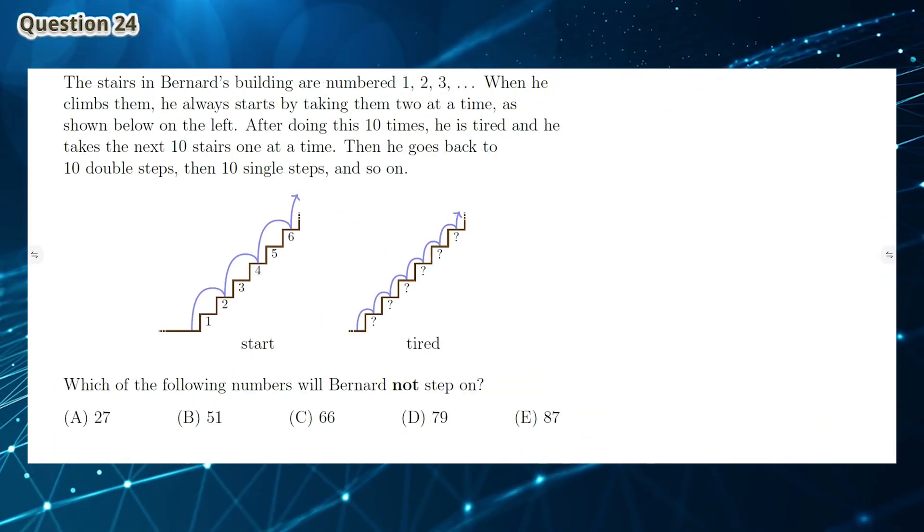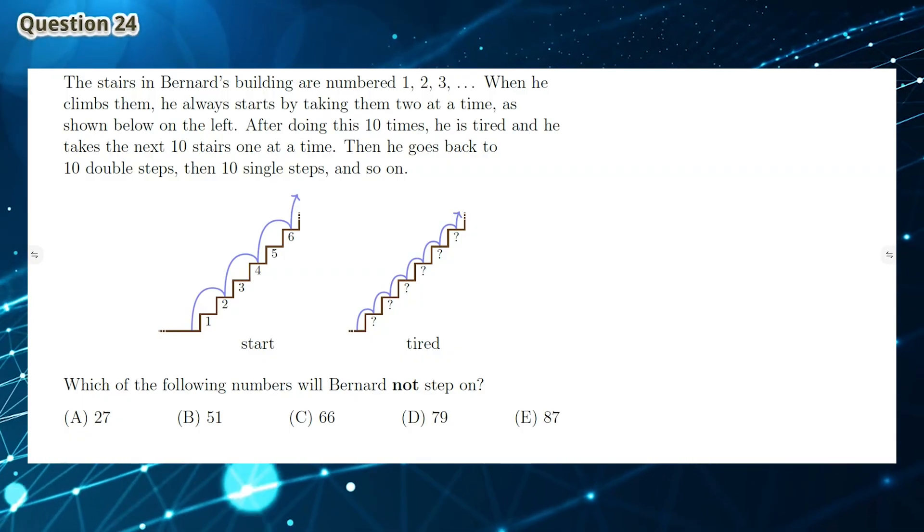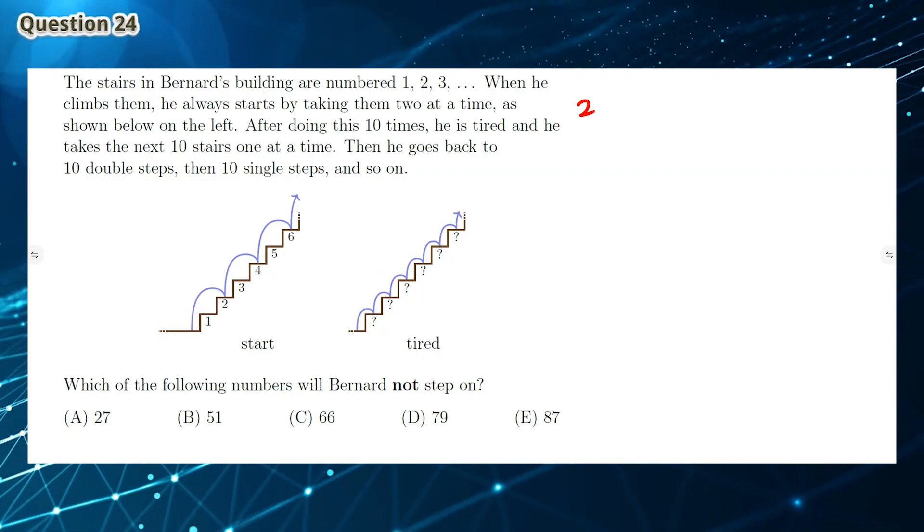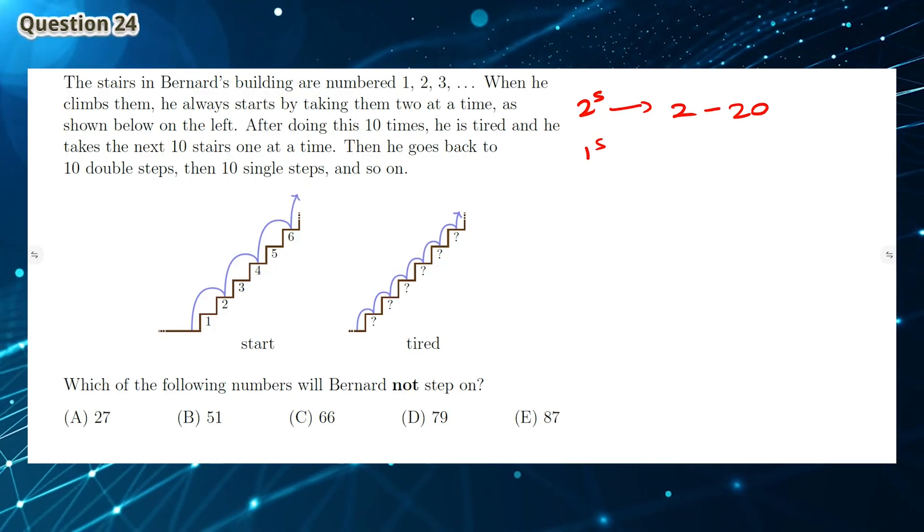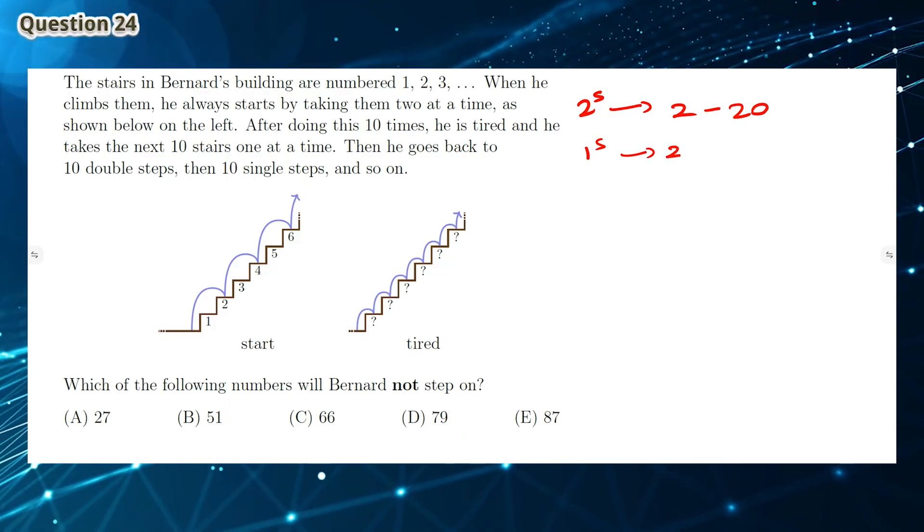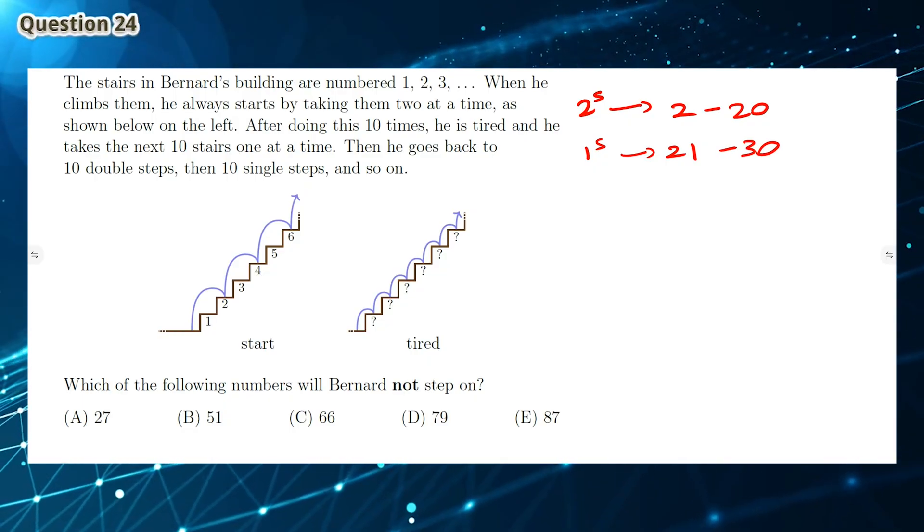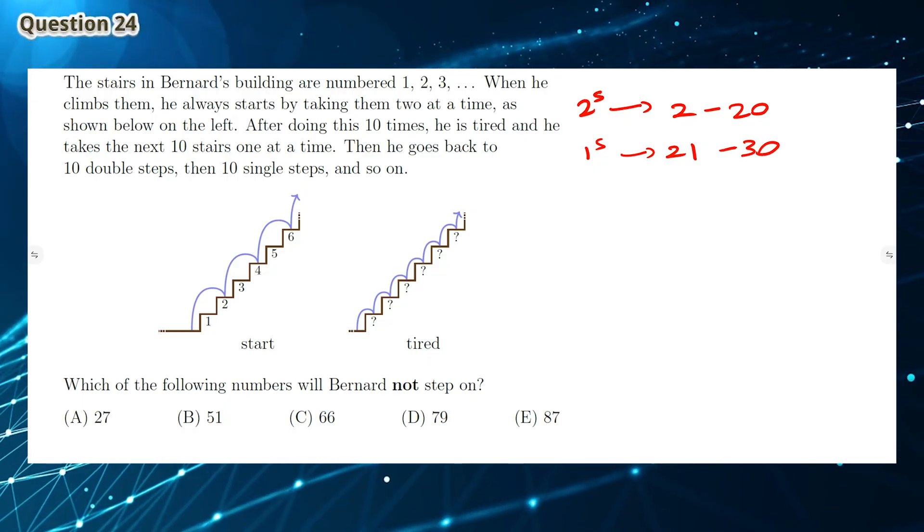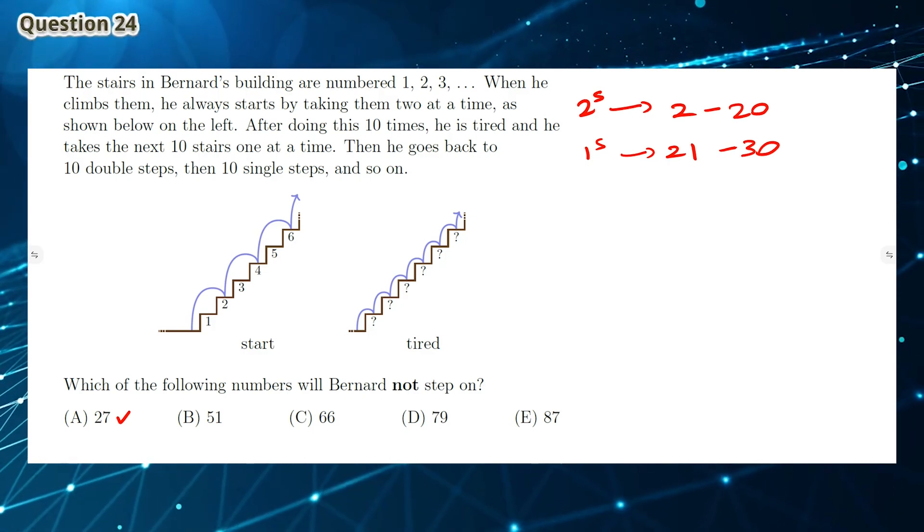Question 24: The first 10 steps that Bernard will take will be 2 steps. These steps will be from 2 to 20. Then he will take 10 one-steps which are from 21 to 30. This means he steps on step number 27. This means that A cannot be an answer.